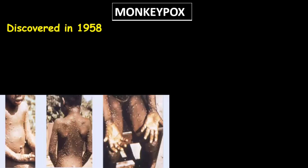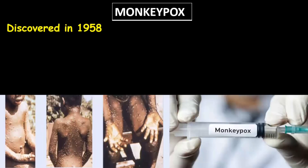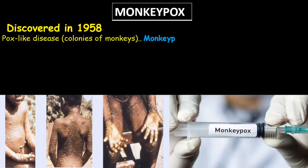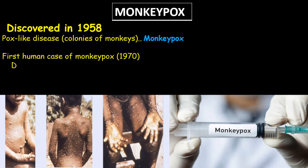Monkeypox was first discovered in 1958 when two outbreaks of a pox-like disease occurred in colonies of monkeys. Therefore we named it monkeypox. The first human case of monkeypox was recorded in 1970 in the Democratic Republic of Congo during a period of elimination of smallpox.